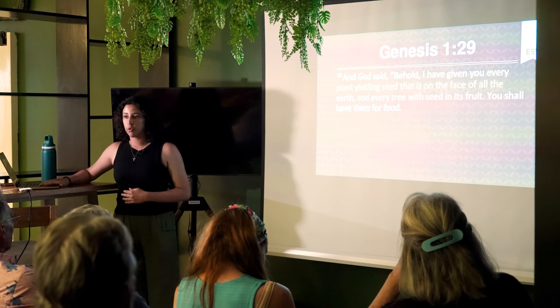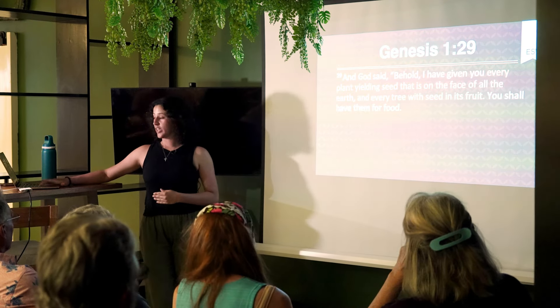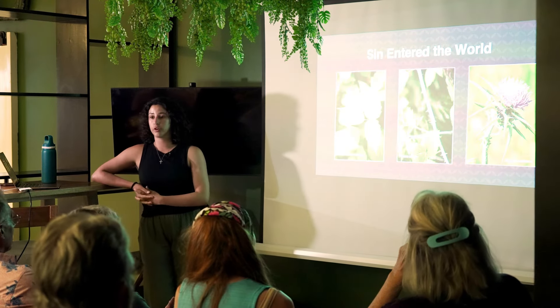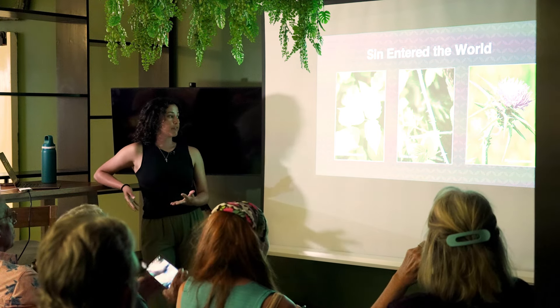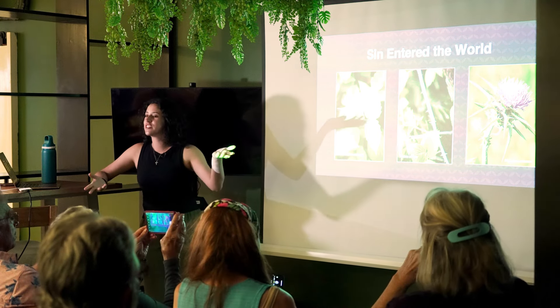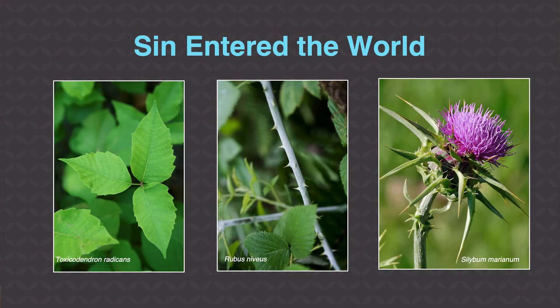Sin entered the world first, and as a result we see thorns, thistles, and poisonous plants. When sin entered the world, we now see this in the plant kingdom as a result.